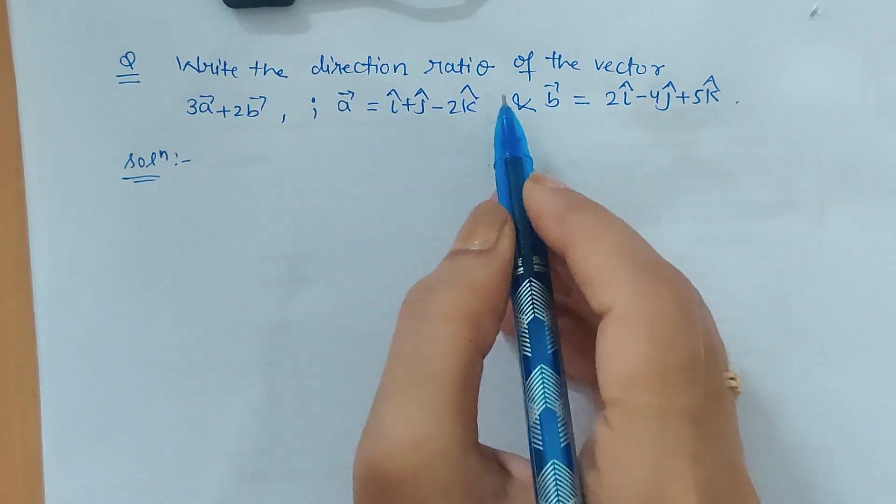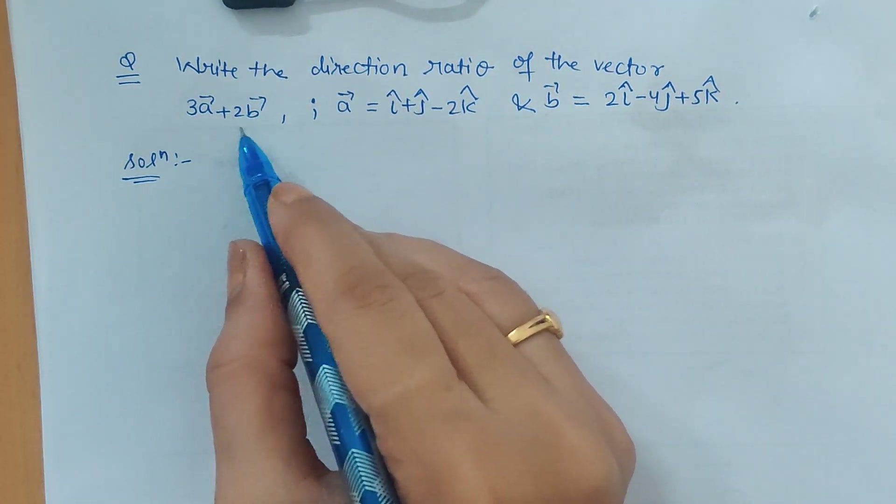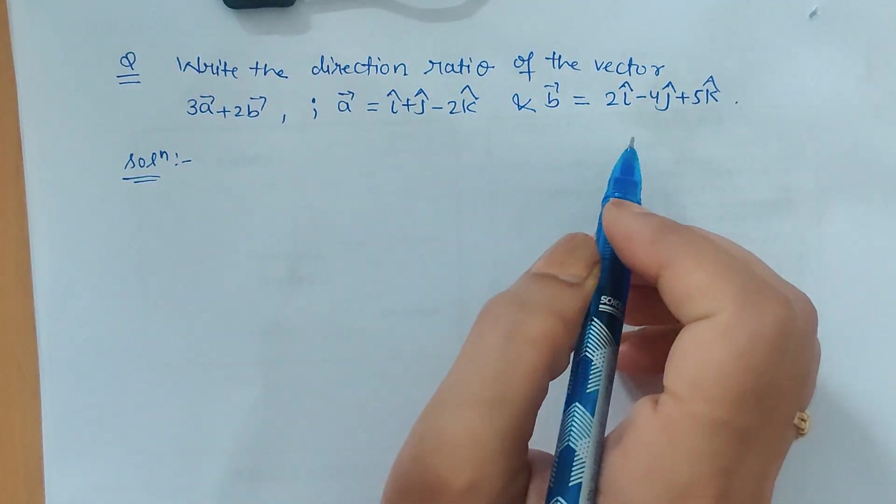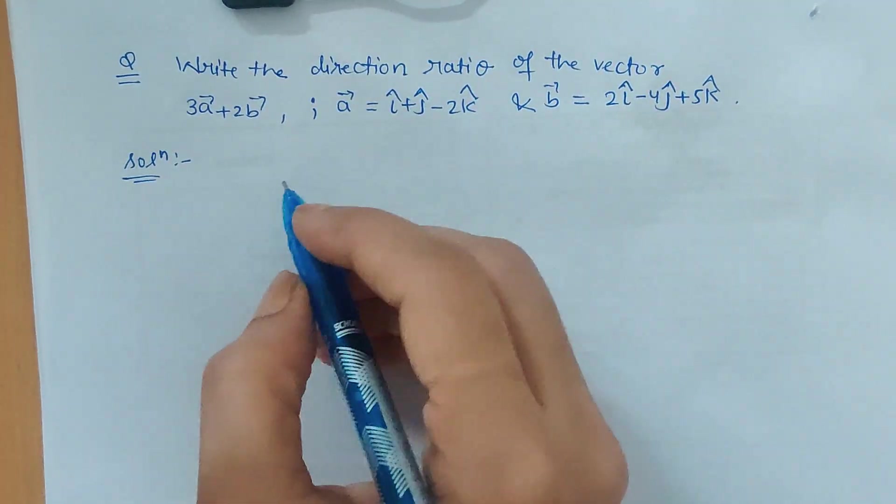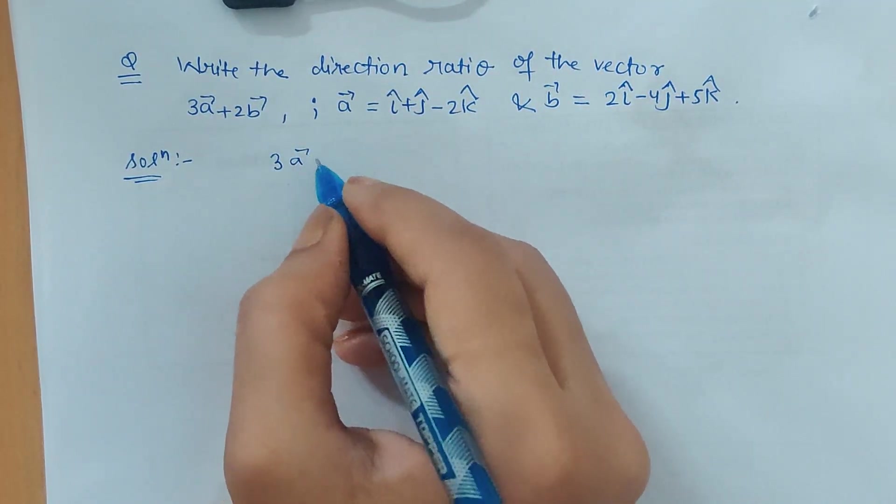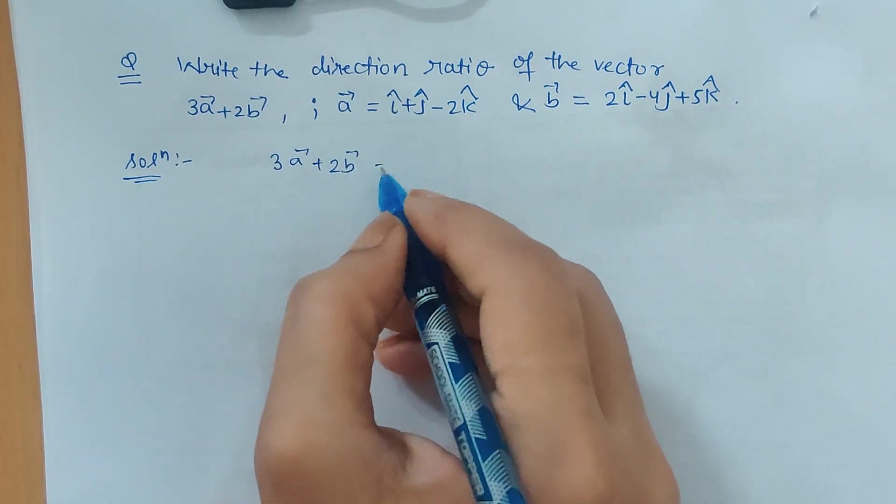Hello friends, here we have to find the direction ratio of the vector 3a + 2b where a and b are given to us. First, we will be calculating the values of 3a + 2b.